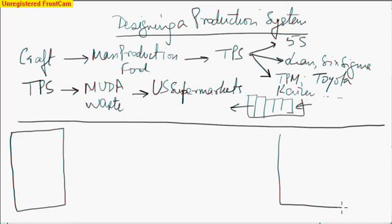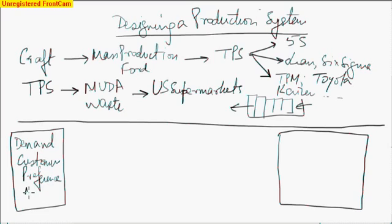The first component is the demand side of the story - who are the customers, what are their preferences, what is the mix to be produced and when. Demand, as we know, fluctuates. On the other side, while there is demand, the other side is raw materials.